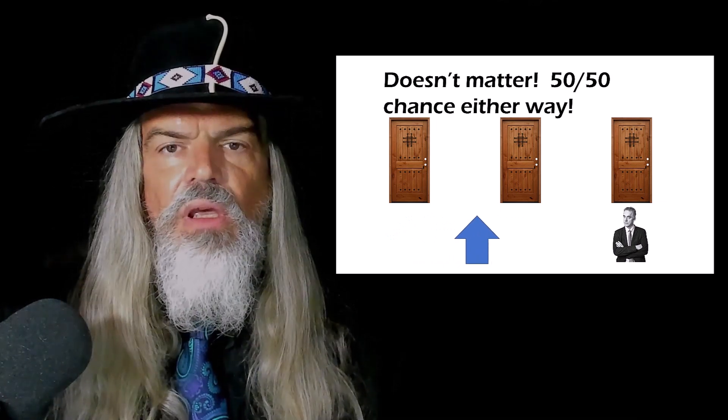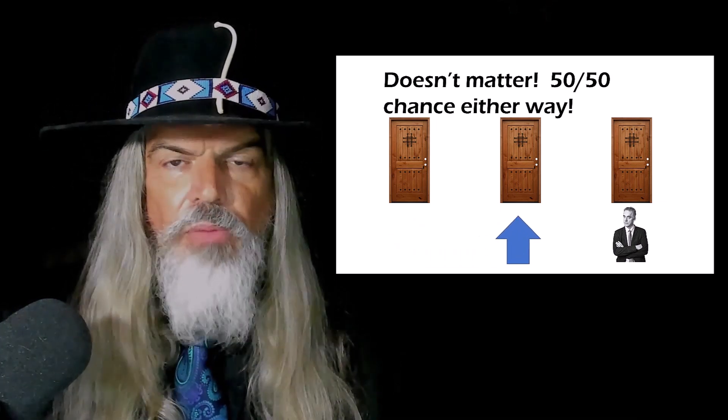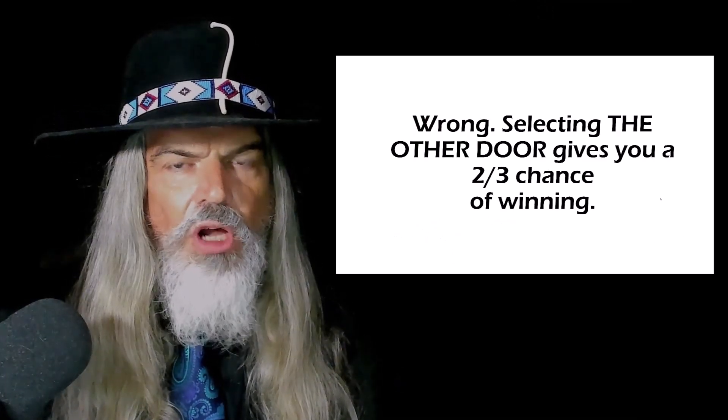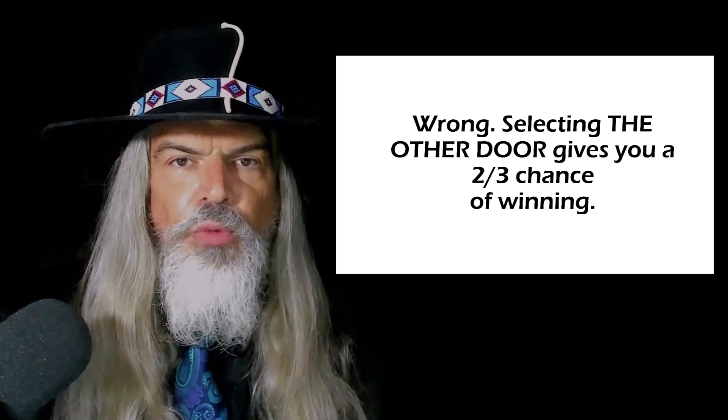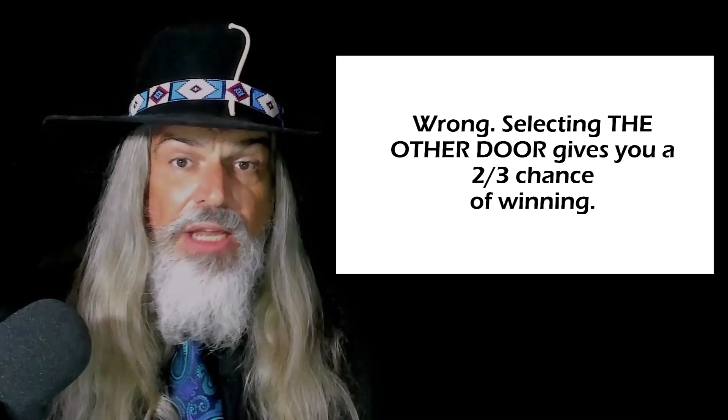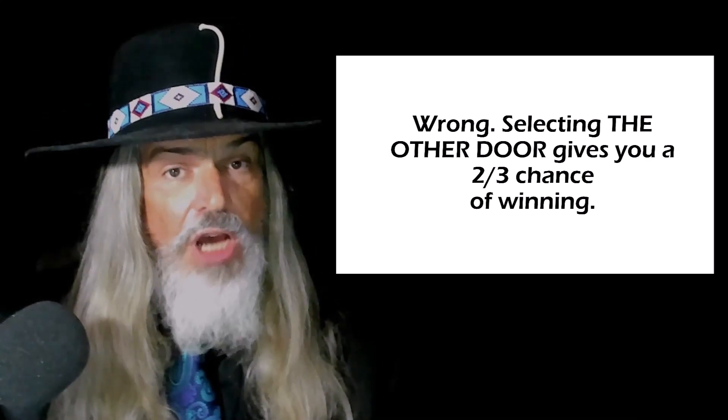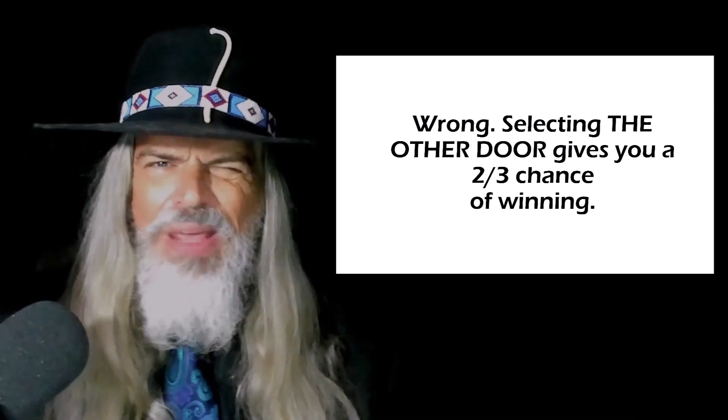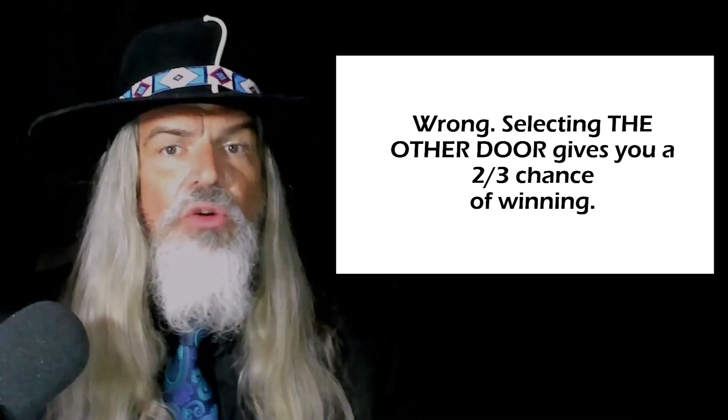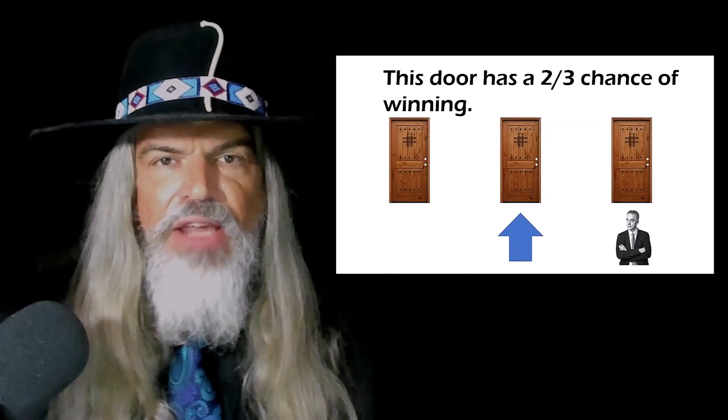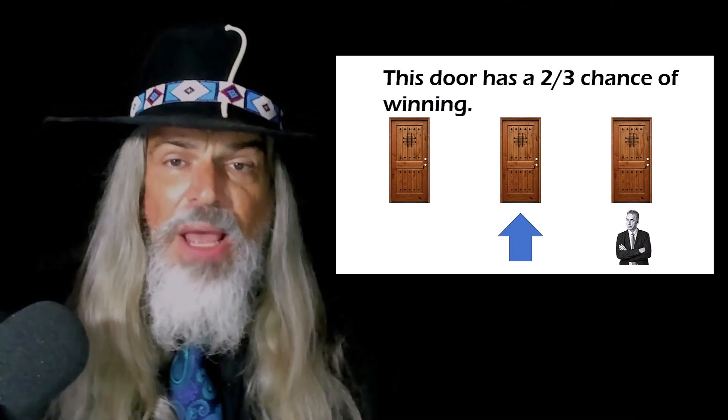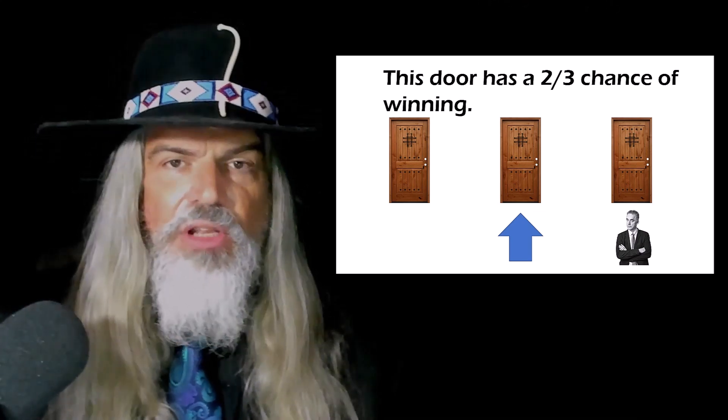Wrong. This is a very simple problem in probability. Very simple. Your cognitive bias is so strong that you want to view the second choice, the choice between keeping your original door or switching to the other unopened door as an independent event. In other words, you want to view that as being independent of the original event, which was presentation of the three doors. But in fact, it's not an independent event. It's dependent on the original event. Doesn't make sense, does it? Let me explain it.